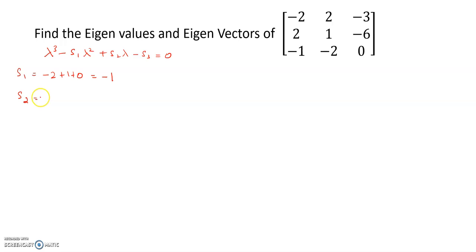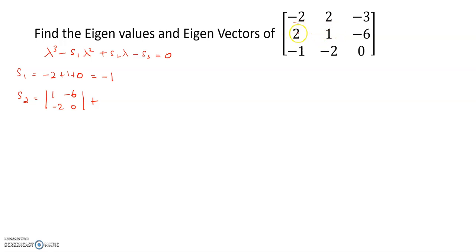For S2, the diagonal entries are minus 2, 1, and 0. For minus 2, leave the row and column; remaining entries are 1, minus 6, minus 2, 0. For diagonal entry 1, leave the row and column; remaining entries are minus 2, minus 3, minus 2, minus 1, 0.